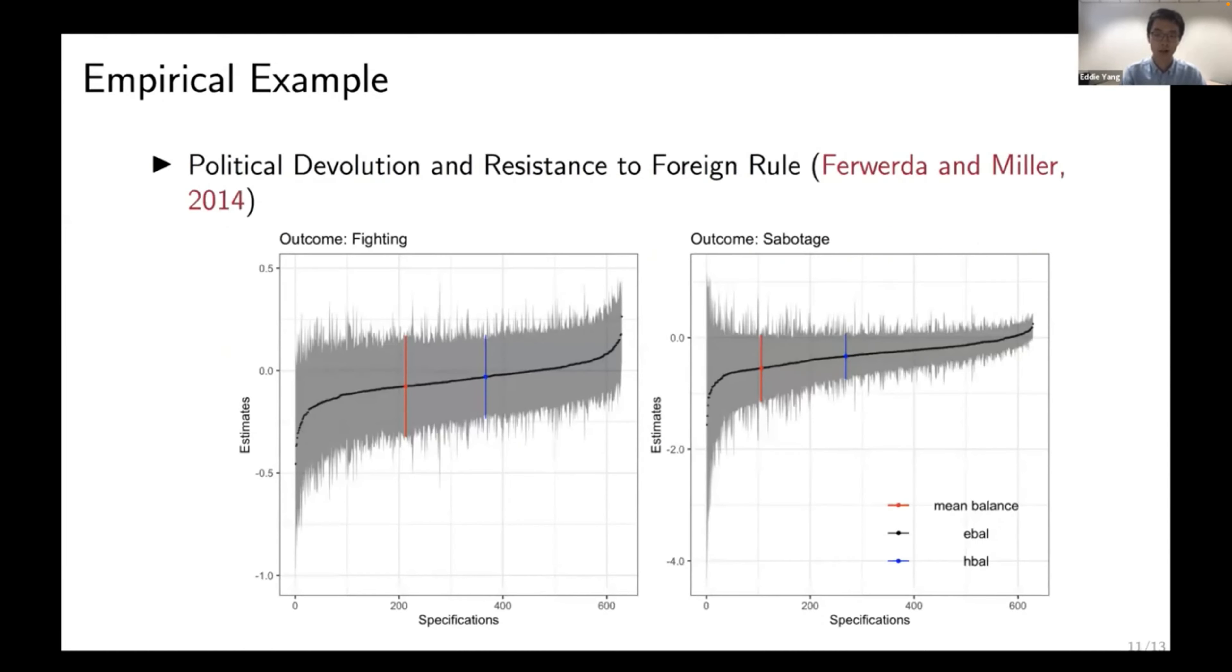And here are the ATT estimates and their corresponding confidence intervals for these two outcomes, as shown by the black dots and the gray whiskers. As you can see, for both outcomes, depending on the specification, we can get an ATT estimate that's either negative or positive, which is definitely less than ideal. But if we were to use HBAL and fix the series expansion up to the third order, we would simply get one specification as shown in blue here. And this is quite different, actually, from just achieving mean balance on the nine covariates.